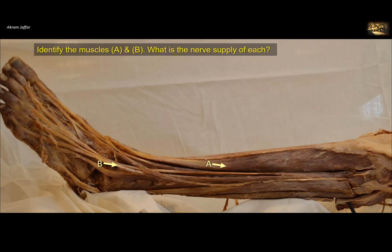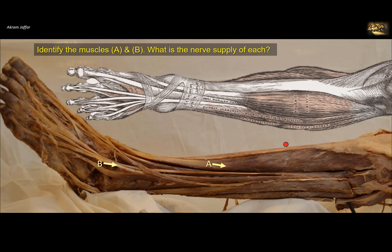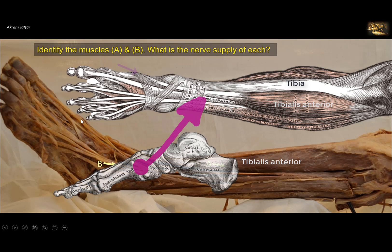Identify muscles A and B. What is the nerve supply of each? This is a dissection of the front of the leg and the dorsum of the foot. You can see this muscle is attached to the tibia — this is the anterior border of the tibia. The medial side is subcutaneous; this is the lateral side. The muscle is tibialis anterior. Follow the tendon of the muscle: it is distally attached to the first metatarsal and the adjacent medial cuneiform bone.